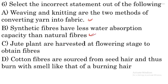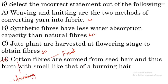Jute plants are harvested at the flowering stage to obtain fibers — this is true, because we harvest jute at the flowering stage. Cotton fibers are sourced from seed hair and thus burn with a smell like that of burning hair — this statement is incorrect, because cotton fibers are found in the fruit, and when we burn cotton the smell is that of burning paper, not burning hair. Burning hair smell comes from wool. So this option is the right answer.